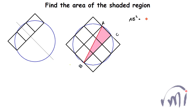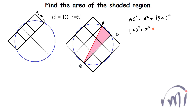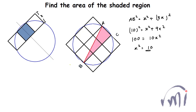AB² equals x² plus (3x)², where x is the length of each side of the small square. Since AB is the diameter of the circle, AB² equals 10² equals 100. This gives x² plus 9x² equals 100, or 10x² equals 100, so x² equals 10. The area of each square is 10 square units, and the area of the two squares together is 10 plus 10 equals 20 square units.